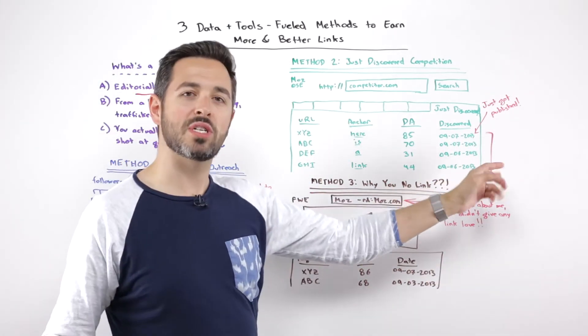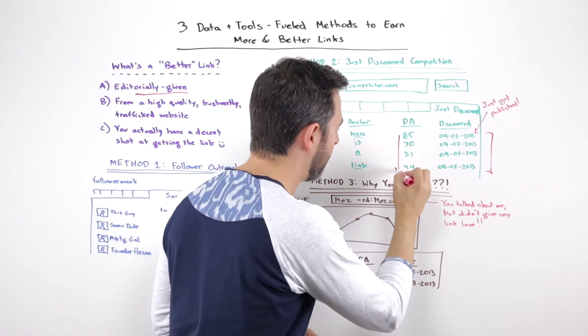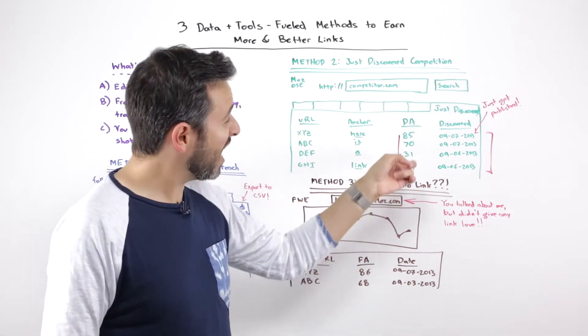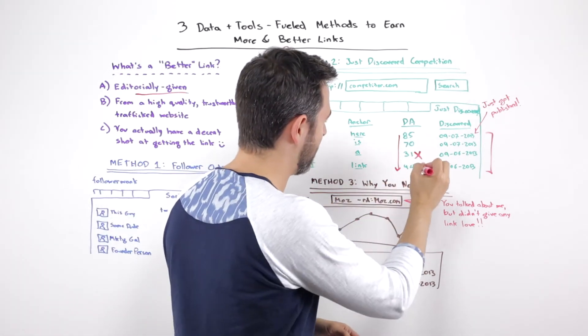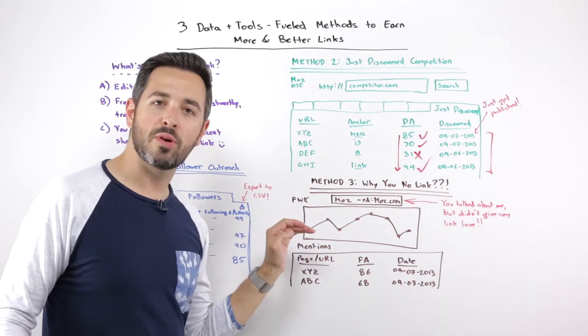The trick is because these things have just been written, just been published, your outreach attempts go way higher. And you can look at domain authority. You can sort by domain authority. So you can look at and say, I don't want to reach out to that guy, but yes, yes, yes. Ideal. Methodology number three.